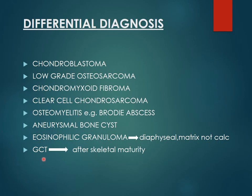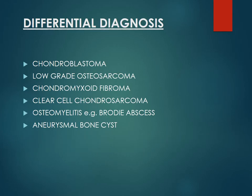GCT presents after skeletal maturity and our case is a 10-year-old male child, so it can easily be ruled out. Eosinophilic granuloma is not very common in long bones — it is more common in the skull and mandible. Even when it presents in long bones, it is more commonly diaphyseal, not epiphysio-metaphyseal like our lesion, and its matrix is not calcified. So both eosinophilic granuloma and GCT can easily be ruled out.